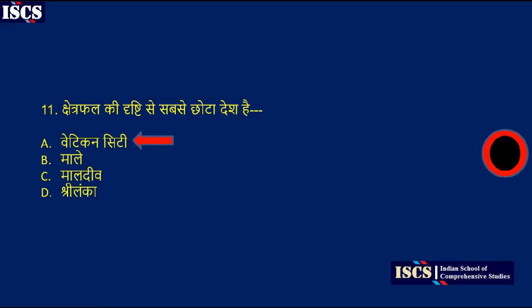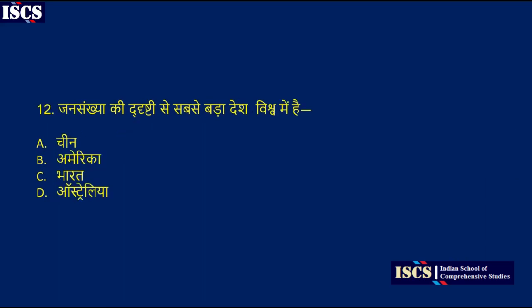Now look at question number twelve: which is the most populous country in the world? Options are China, America, India, or Australia. The right answer is option A, China.